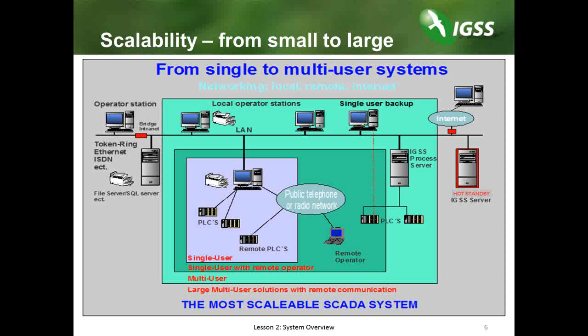As the process grows larger, more operator systems and stations can be added. An IGSS server becomes necessary if the process expands into a multi-user system, as depicted in the light green area. A multi-user system is defined as a system with one or more operator stations and requires a server to be set up. As a side note, an operator machine can be configured to connect as a multi-user but set up to continue gathering data in case of a server outage. When the server goes online again, the collected data is synchronized back to the server — this is called a single user backup operator.